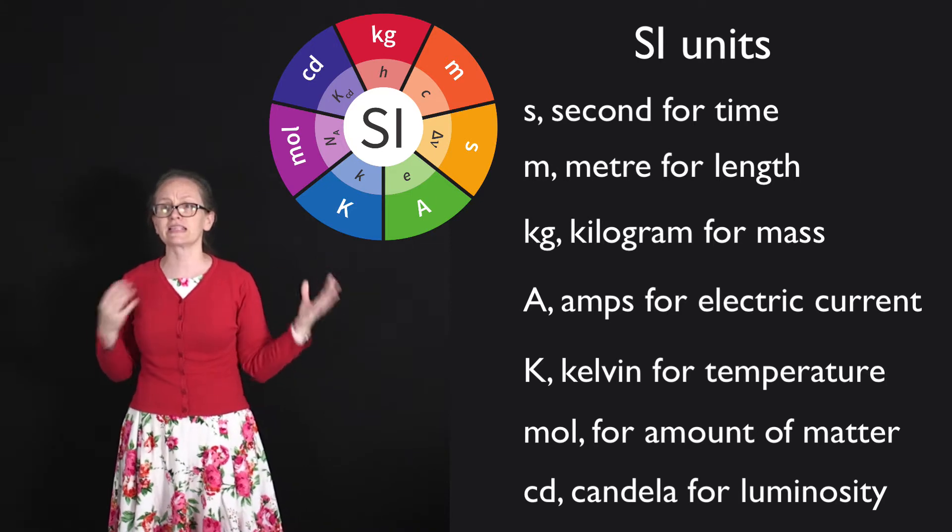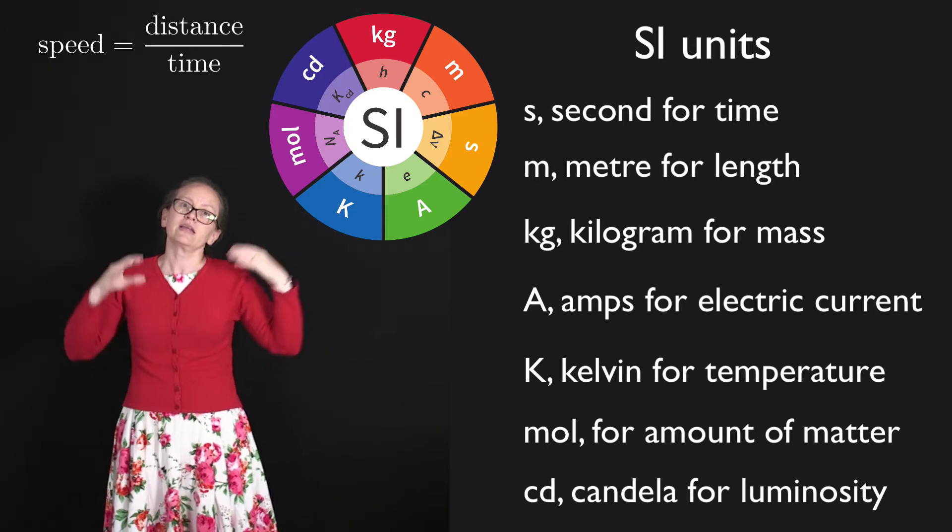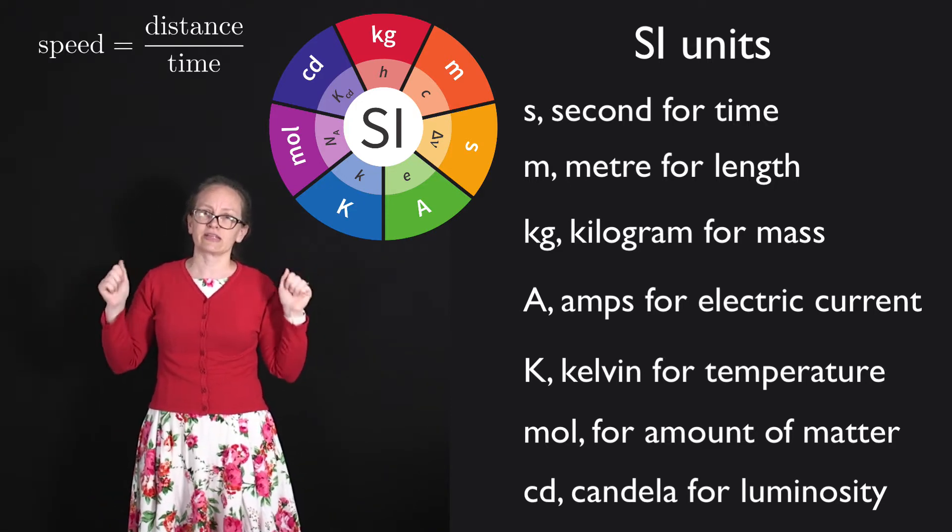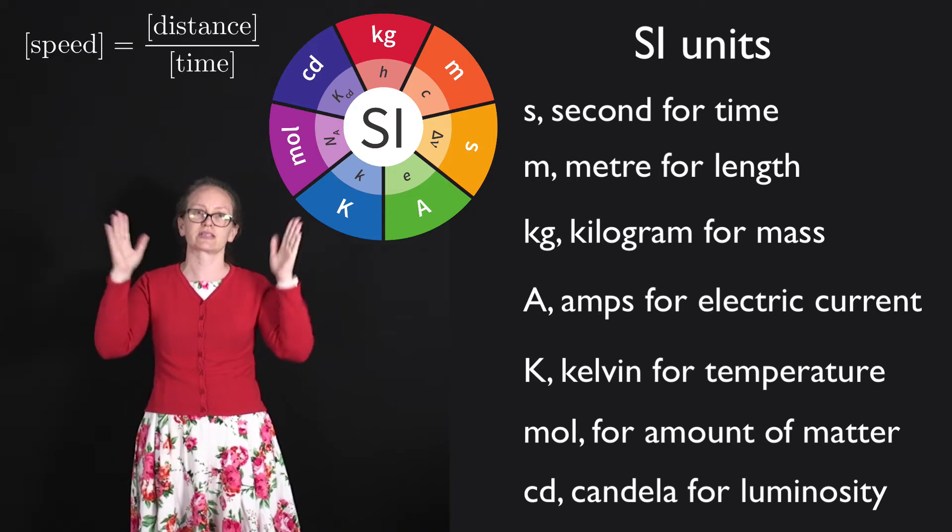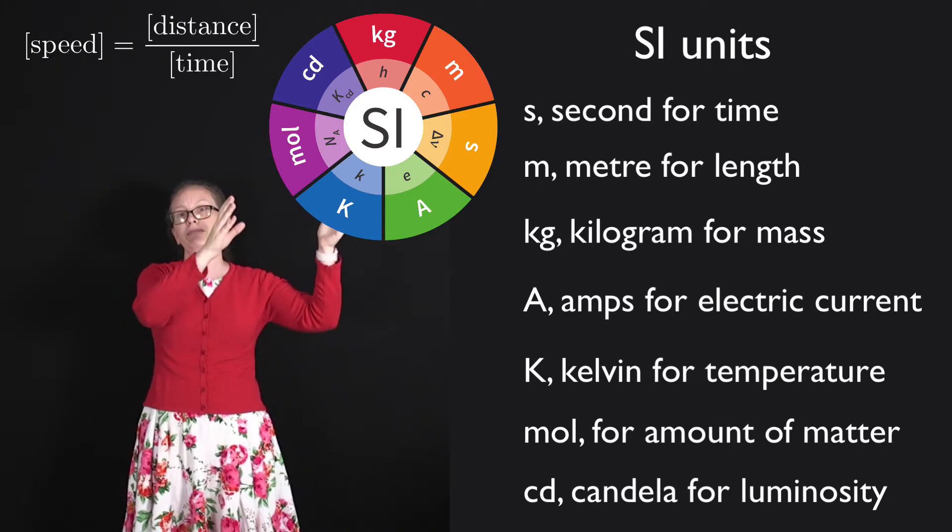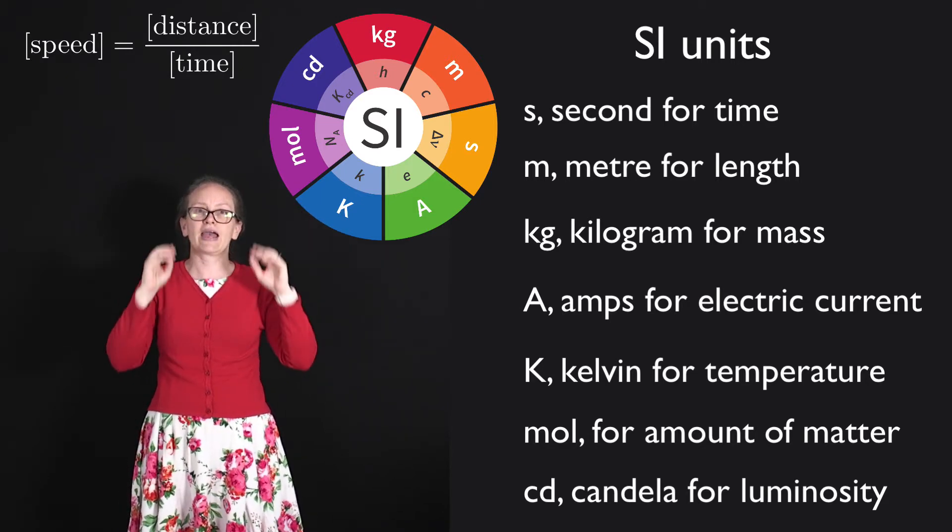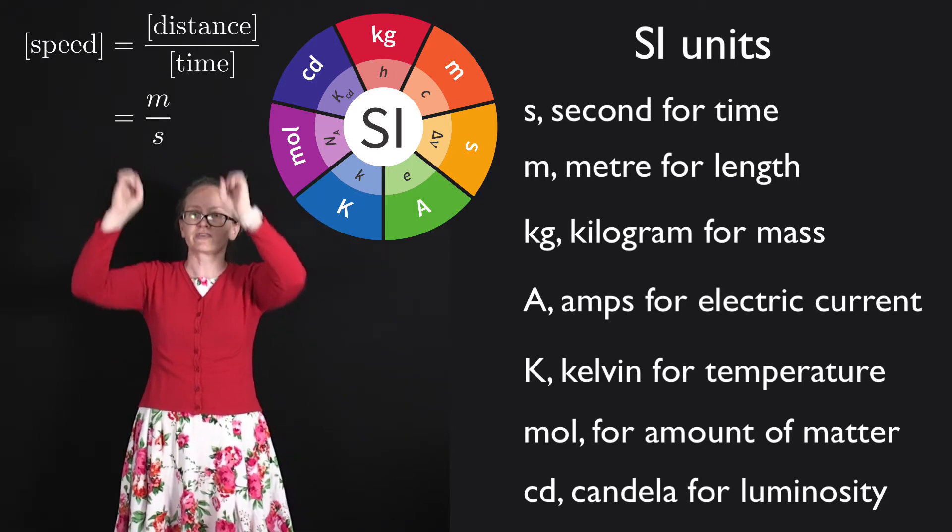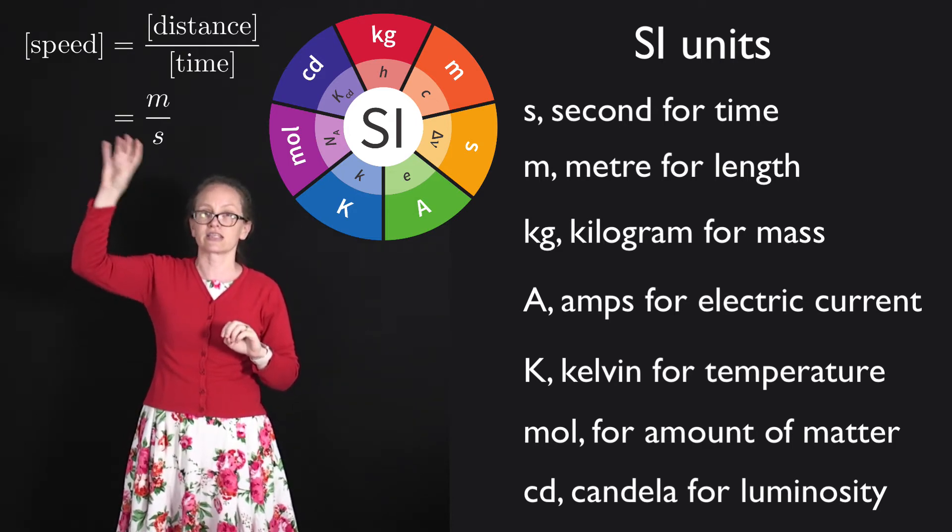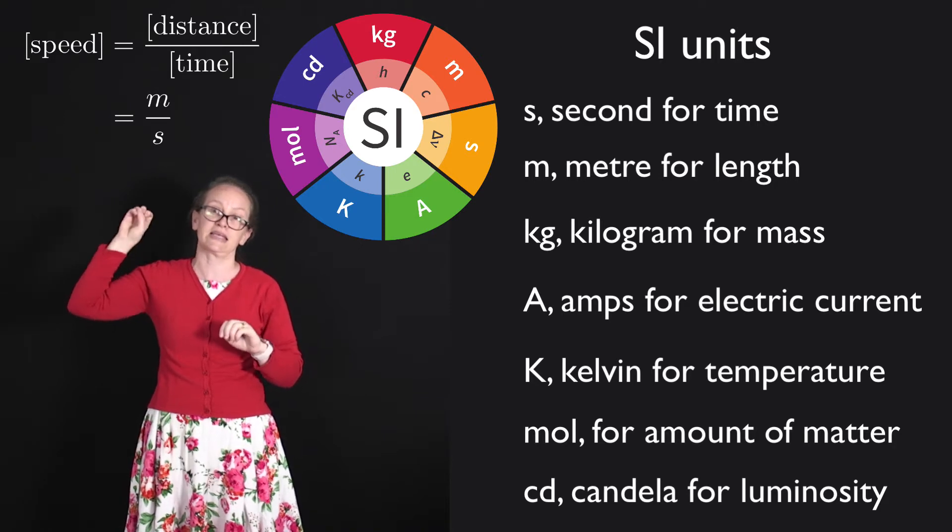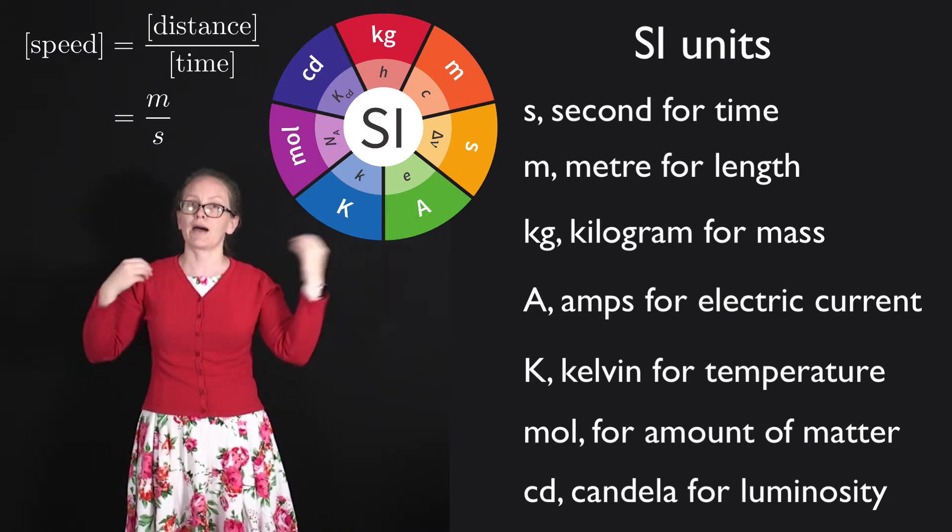For example, we've been considering speed before, and we know that speed is equal to the distance over time. When we want to indicate that we're considering units, one notation that people sometimes use is to put square brackets around something. So if we put square brackets around speed, we're showing that we're thinking about the units for speed, and this is going to be equal to the units for distance over the units for time. We know that the units for distance is the meter, and the units for time is seconds. So this tells us that the units for speed are meters per second.